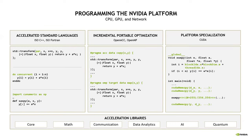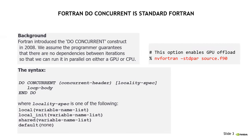For this section, we're just going to talk about standard languages in Fortran. Current standard Fortran — this construct was introduced in Fortran 2008. There is a little bit of controversy about this. The standard does not quite specify do concurrent in the same way that we are using it. We assume the programmer guarantees there are no dependencies between iterations so that we can run it in parallel on either a GPU or a CPU.